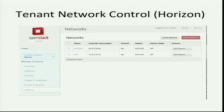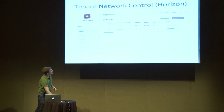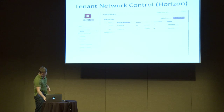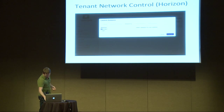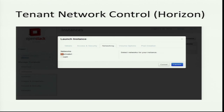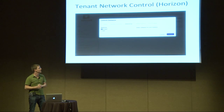I decided against a live demo, but I'll walk you through the flow in Horizon, the OpenStack GUI. When running Quantum you get a Networks tab. You click on it and see a list of networks — these may be created by an administrator or by you. You can create a new network, specify a network name and address, whether it's IPv4 or IPv6, gateway settings, DHCP, etc. When you launch an instance, you choose what network to plug it into. This is the core feature set exposed in Horizon so far.